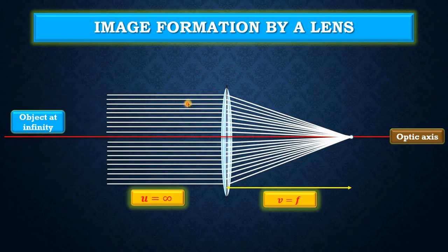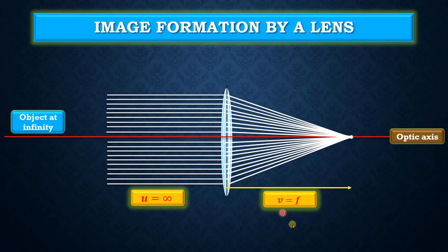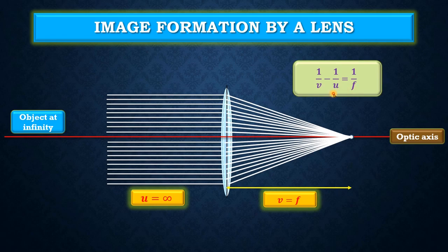A parallel beam of white light coming from the object is incident on the convex lens, so the object distance is equal to infinity. These rays after falling upon the convex lens converge to a point on the optic axis, known as focus, and the image is formed at this point. The image is always a point image, at a distance v from the optic center equal to the focal length f. This can be verified mathematically: 1/v − 1/u = 1/f; since u = ∞, 1/u = 0, so v = f.